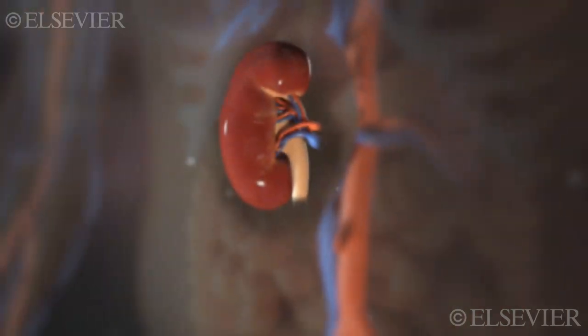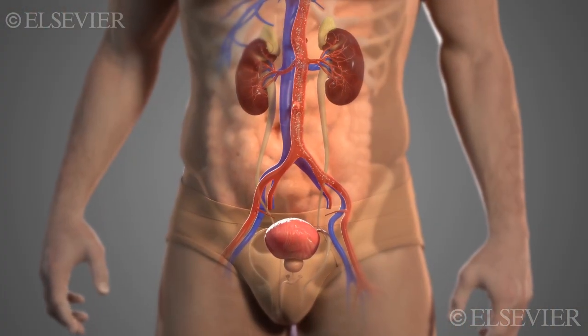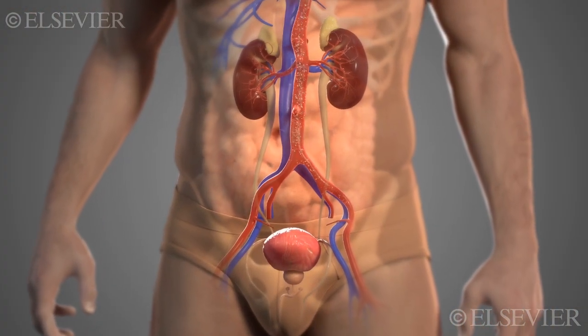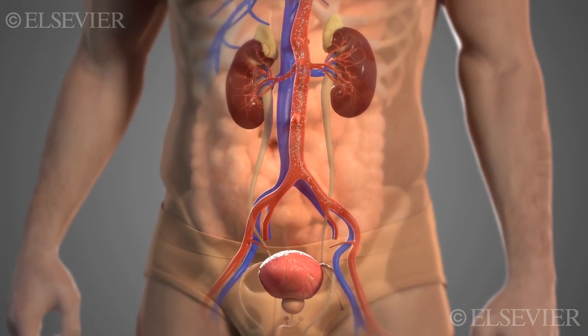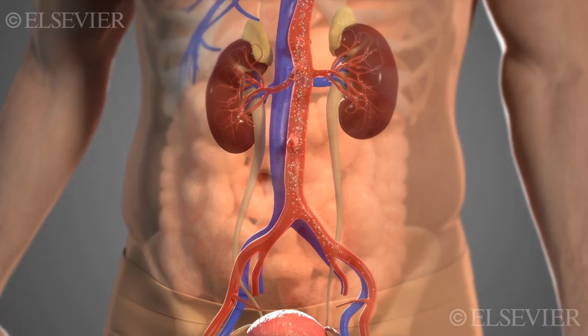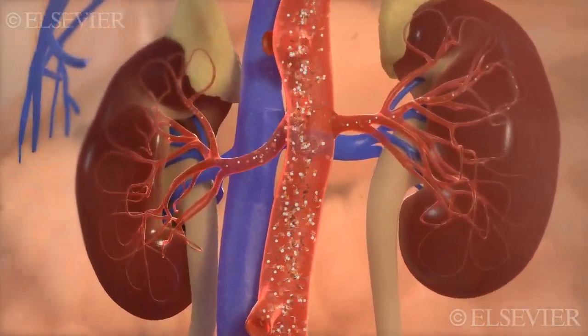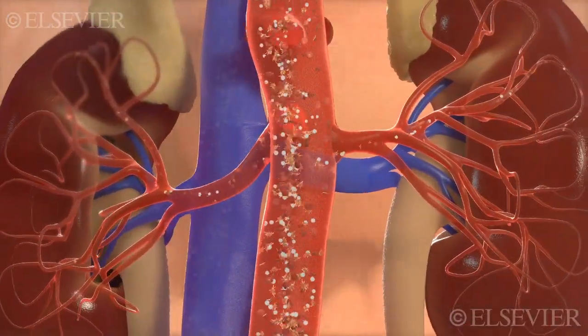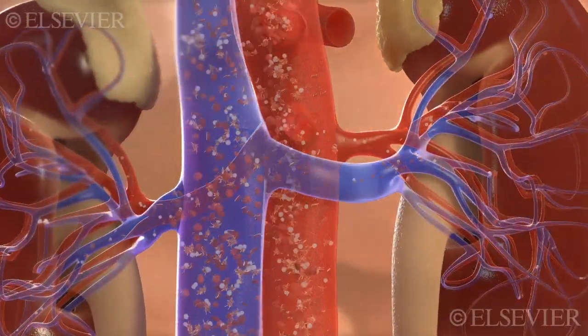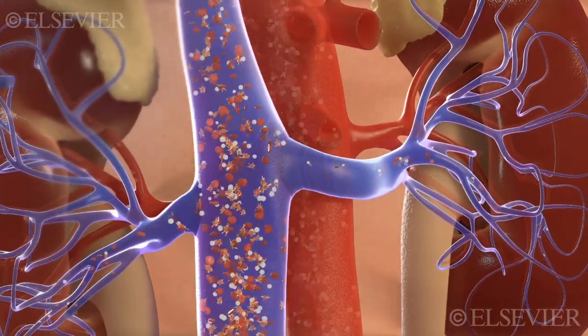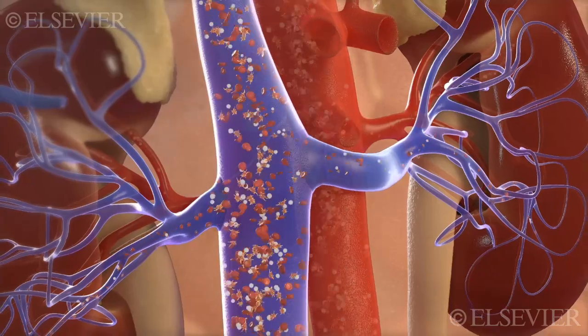The kidneys are highly vascular. Each minute, approximately 1,200 milliliters of blood, or one-fifth of all the blood pumped by the heart in that minute, passes through the kidneys.